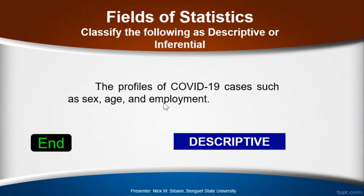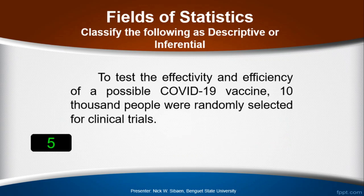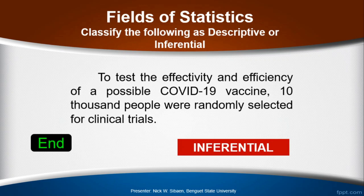Another one: to test the effectivity and efficiency of a possible COVID-19 vaccine, 10,000 people were randomly selected for clinical trials. Is this descriptive or inferential? The answer is inferential, because from this statement someone took a smaller group of only 10,000 people and concluded whether that vaccine is effective and efficient. The researchers did not take all people in the world just to test a vaccine.